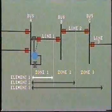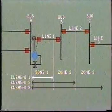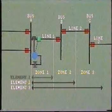Generally speaking, the first element protects the primary zone, as shown here, by opening the first breaker, breaker A.